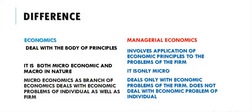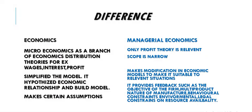Microeconomics as a branch of economics deals with distribution theories like wages, interest, profit, and rent, because it considers the four factors of production: land earns rent, labor earns wages, capital earns interest, and the entrepreneur earns profit. But managerial economics only deals with profit. Therefore, the scope of managerial economics is narrower, while the scope of economics is wider.